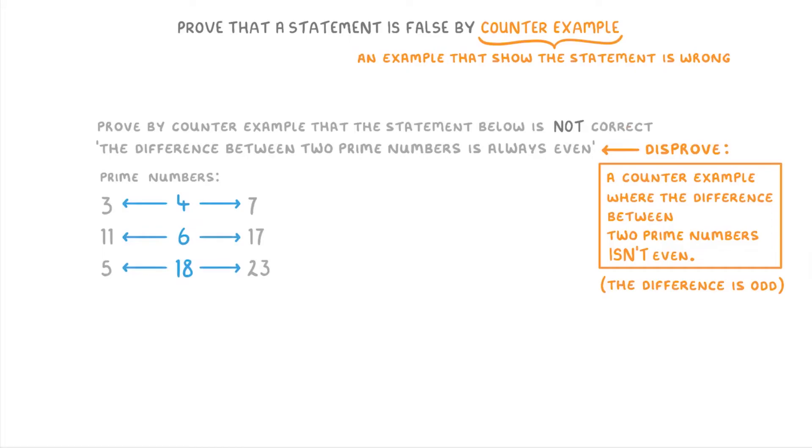which actually supports the statement rather than disproving it. If we think about why this is, it's because the difference between two odd numbers will always be even.